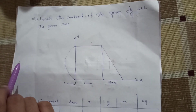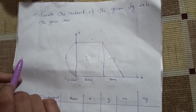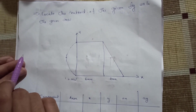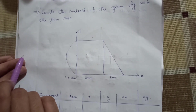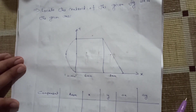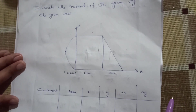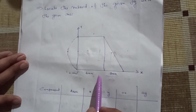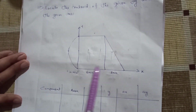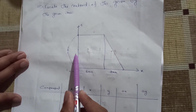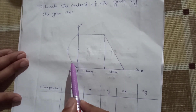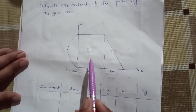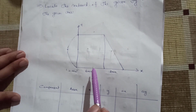Good evening. The next problem is to locate the centroid of the given figure with respect to the given axis. We will do two questions. One question involves a composite area — here there is a semicircular portion, a rectangular portion, and a triangle. Three shapes make up this composite area.